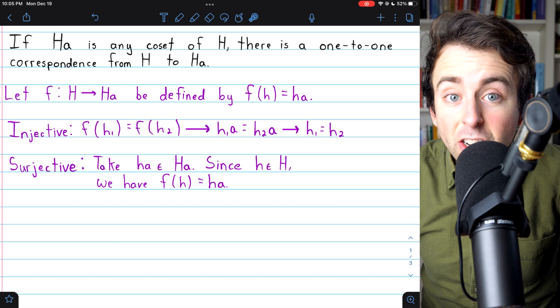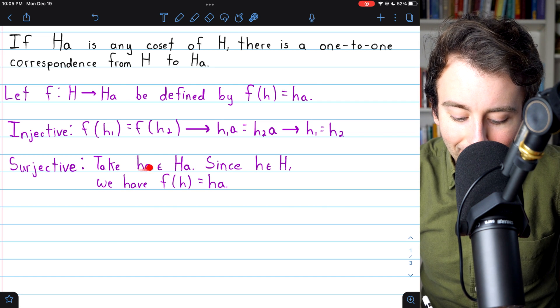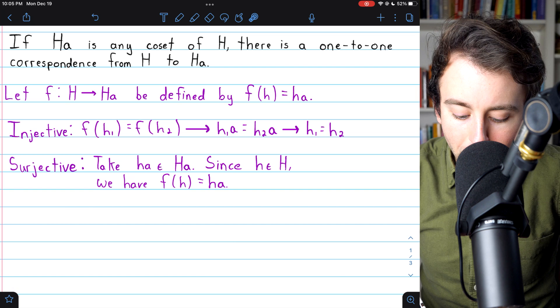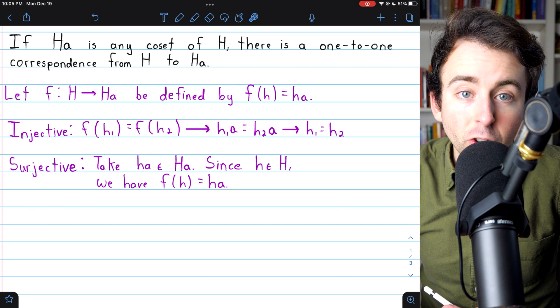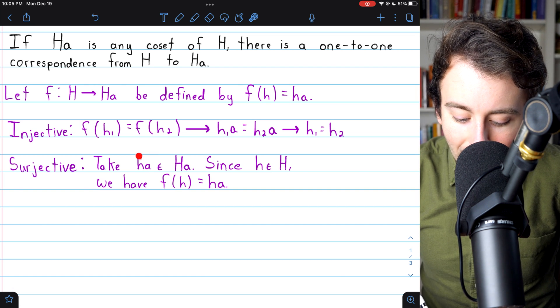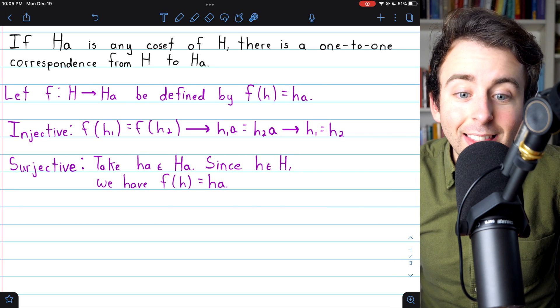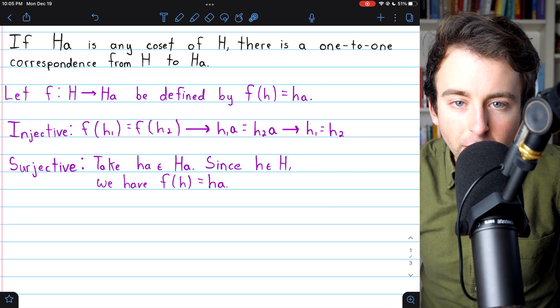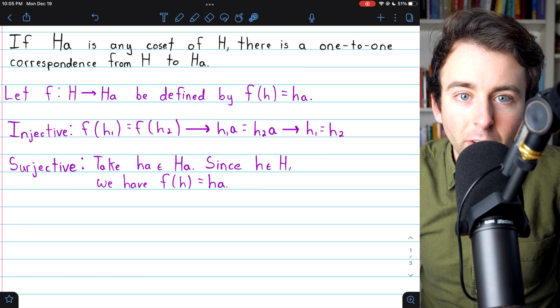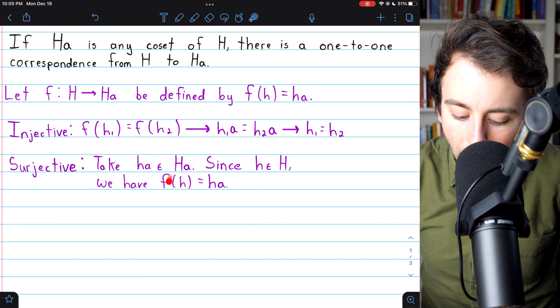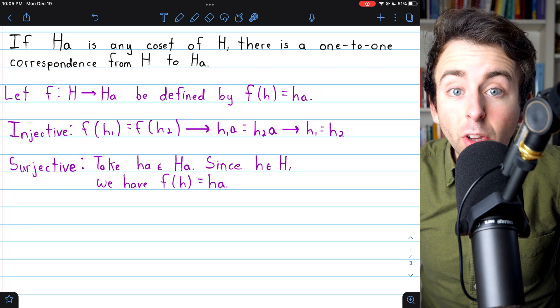So we just have to take an arbitrary element of the coset, and each element of the coset looks like this, ha. So our arbitrary element can have this form ha. Since this element h is in the subgroup big H, that's the domain of our function. And so we can put it in our function and see that F(h) will equal ha.